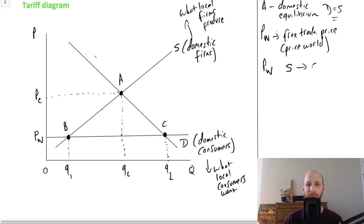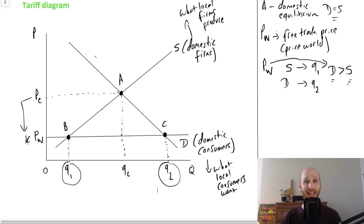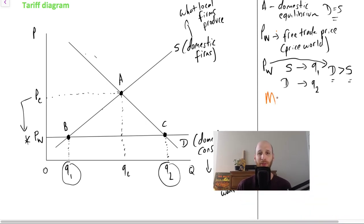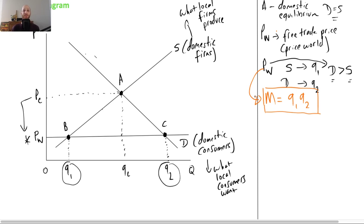So at price world, domestic supply is equal to Q1, and you can see that's relatively low here because the price is so low compared to equilibrium. Domestic firms aren't really excited about providing goods at that level. But at price world, demand is Q2, and this is because consumers are really excited about getting a price that is below equilibrium. So at price world, demand exceeds supply, and consumers want to get those goods from somewhere else. The difference between demand and supply comes from imports. So the level of imports at price world is the difference between demand and supply that is filled from overseas.